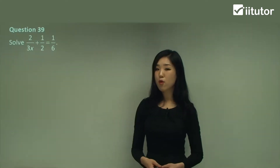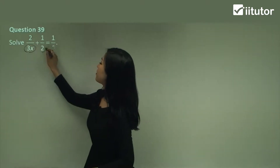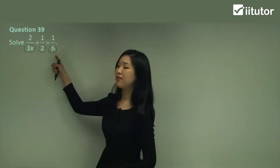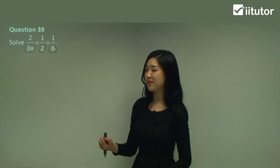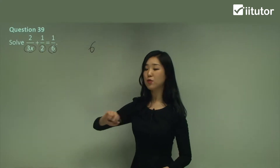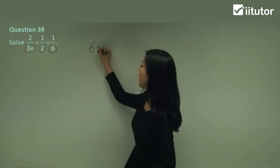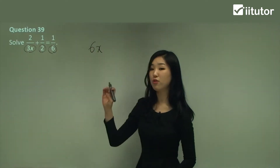Question 39. We've got more than one fraction. This is where I want you to think about the lowest common multiple. The denominators are 3x, 2, and 6. Now don't worry about the x for a moment — worry about 3, 2, and 6. What's the lowest common multiple of 3, 2, and 6? It's 6. So 6 is the lowest common multiple, but we have an extra x.